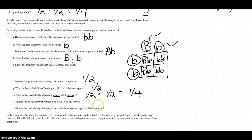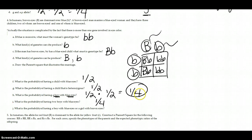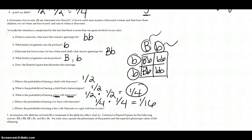What's the probability of having two boys with blue eyes? We already know the probability of one boy with blue eyes is one fourth. Having two boys with blue eyes involves two independent events: one fourth times one fourth equals one sixteenth. So the probability of having two boys with blue eyes is one sixteenth.